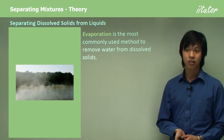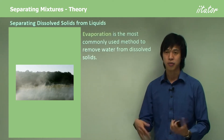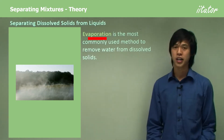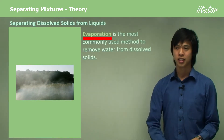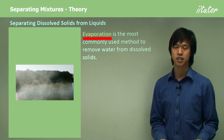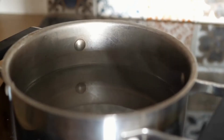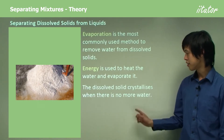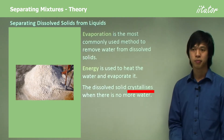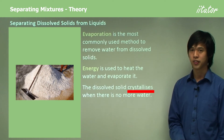What if we have a dissolved solid? Salt, say, will dissolve in water — so how do we separate those two? Evaporation is the most common method. All we do is evaporate the liquid from the solid, and then you're left with the solid. That's how we get table salt from the sea — we take seawater, evaporate all the water, and you're left with salt. Energy — heat, light — is used to evaporate the water. The dissolved solid crystallizes when there is no more water.